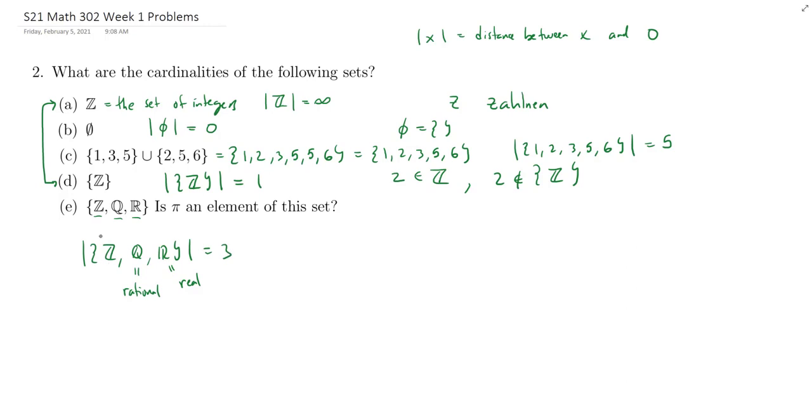So this set has three elements in it. What's the first element? The set of integers. Second element, set of rationals. Third element, set of reals. Now, I'm saying first, second, third, like there's an order. Of course, there's not. Sets don't care about order.